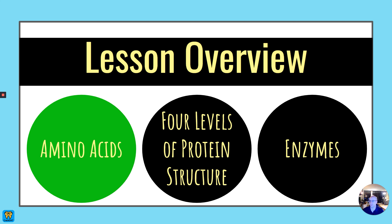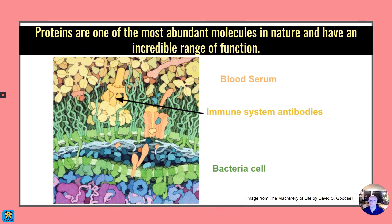First, let's talk about amino acids. Proteins are one of the most abundant molecules in nature and they have an incredible range of functions. They make up parts of our blood serum, helping to pull fluid back into our vasculature. They serve as antibodies to recognize foreign proteins or bacteria. They have a huge role of functions in our body and they're very important.